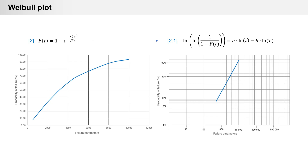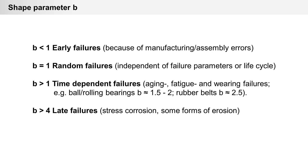Weibull distribution is linearized by logarithm. The shape parameter B gives information about life data. If B is less than 1, it indicates early failure, possibly due to manufacturing errors. If B equals 1, it is random failures, not failures of life. If B is greater than 1, we have time- or cycle-dependent failure, and if B is bigger than 4, it is late failures.